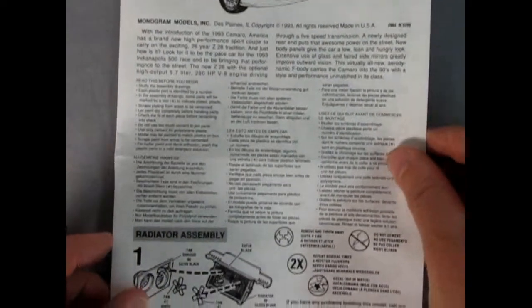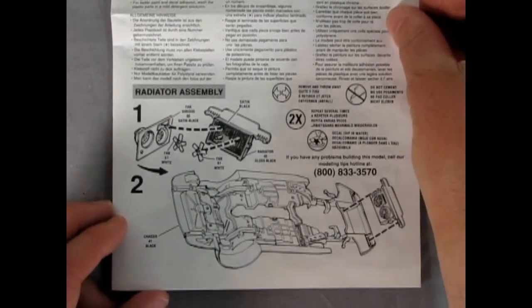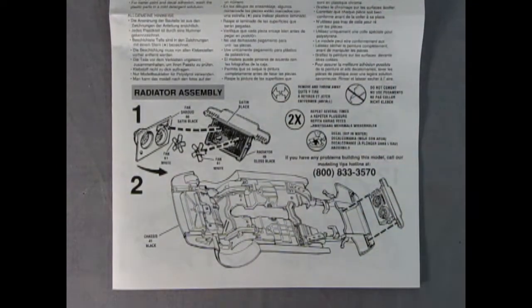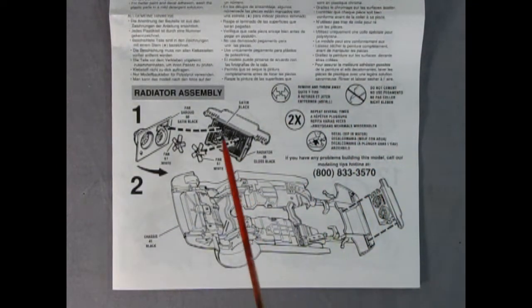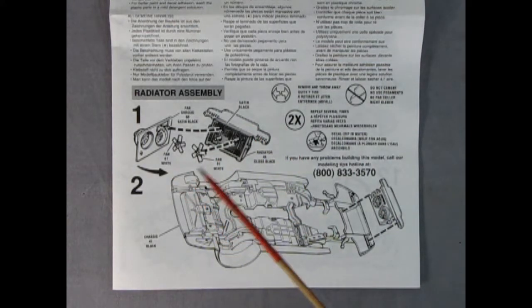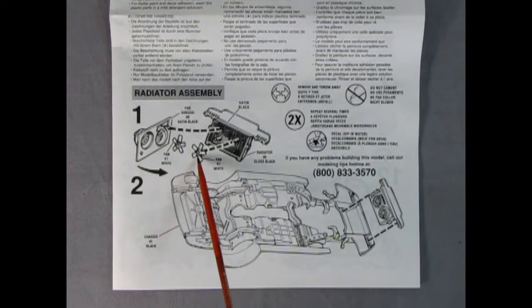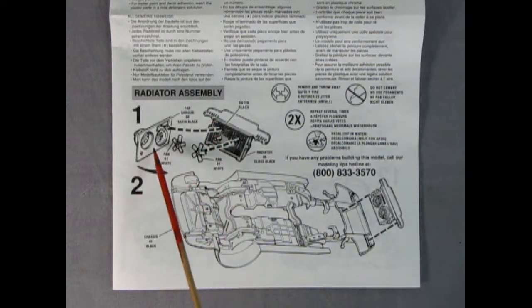So as we open this up you can see that we've got panels one and two. Right away we start off with our radiator, which is kind of unusual. Normally in these model kits you start off with the engine, but there's the two fans gluing onto these two pegs on the back of our radiator, and then we've got the front fan shroud gluing on over top. The entire fan drops into our chassis, which says to be painted black.